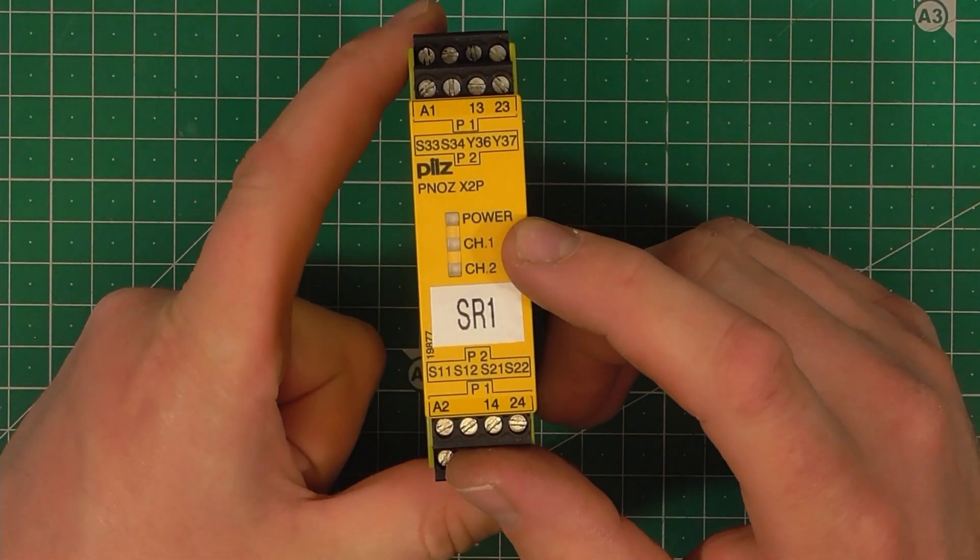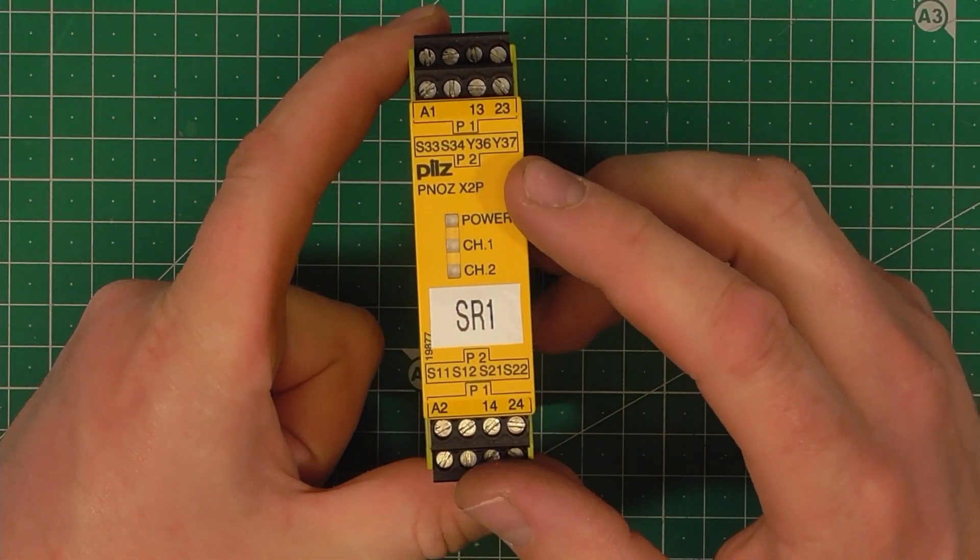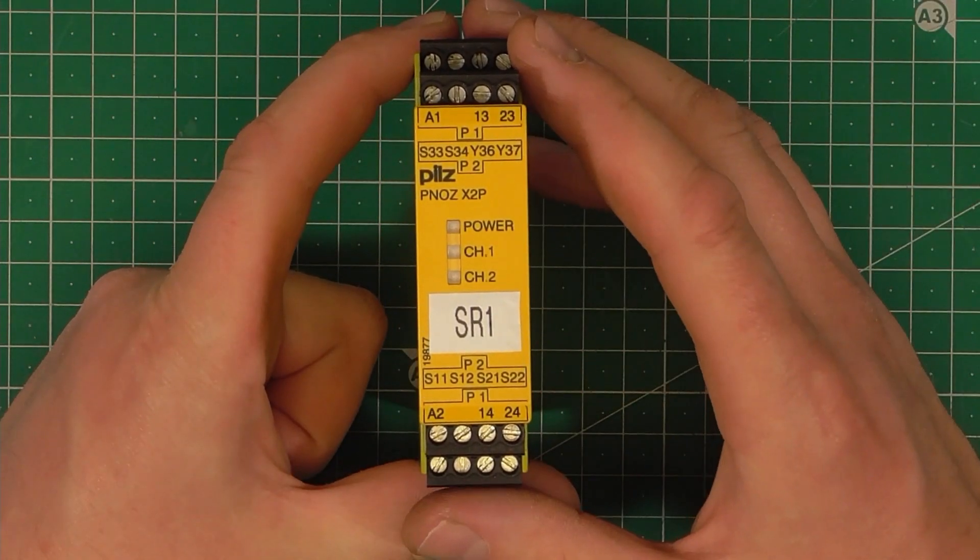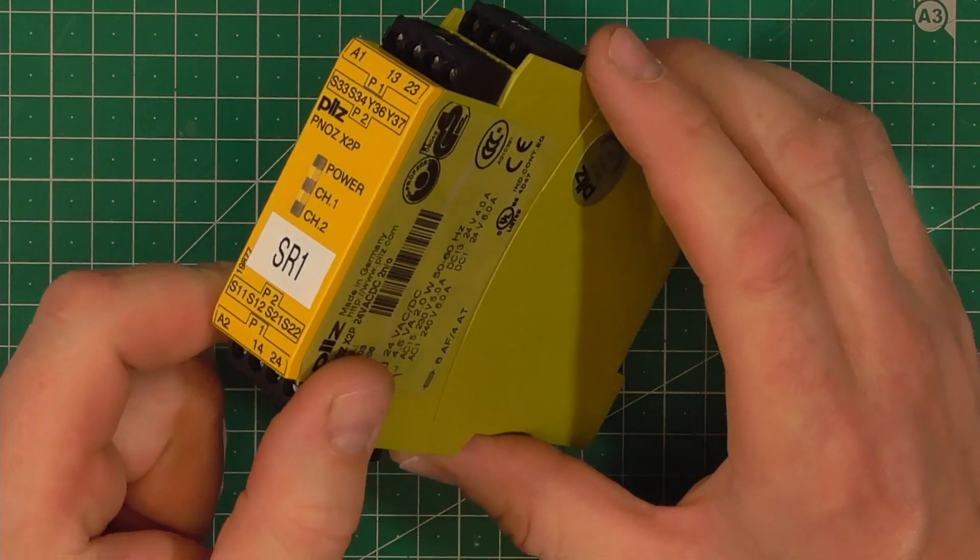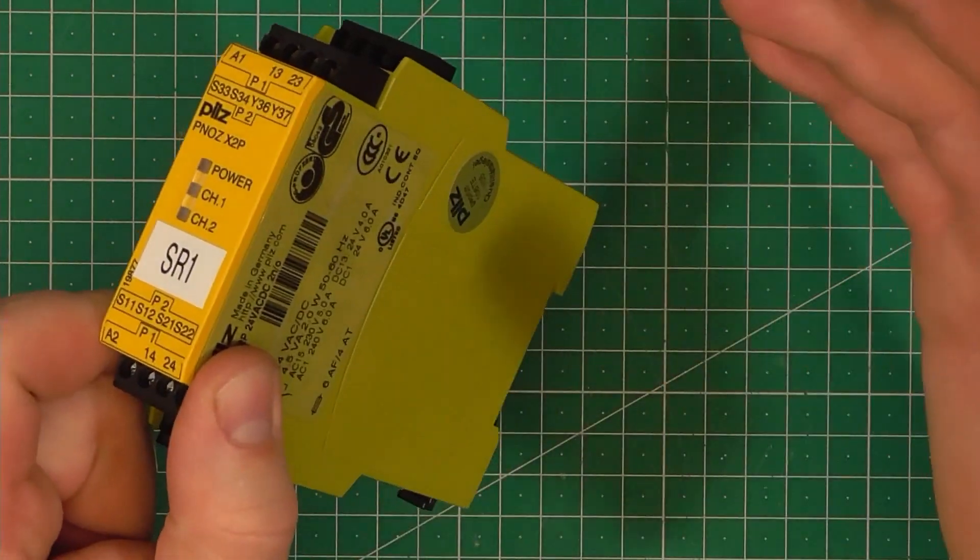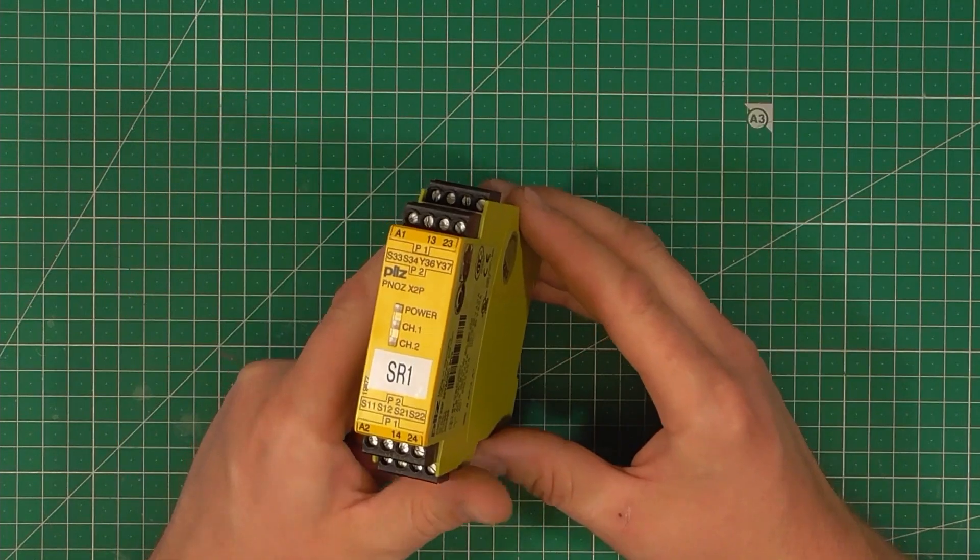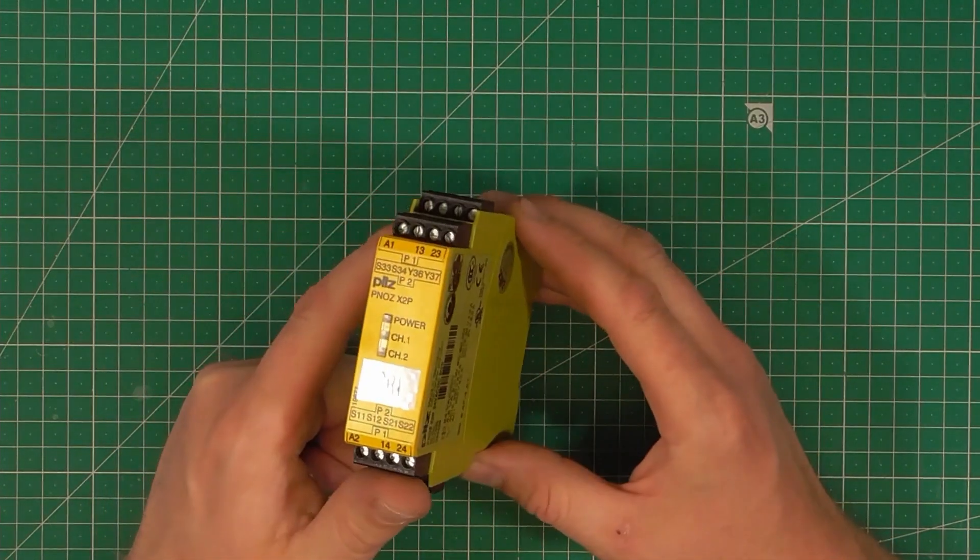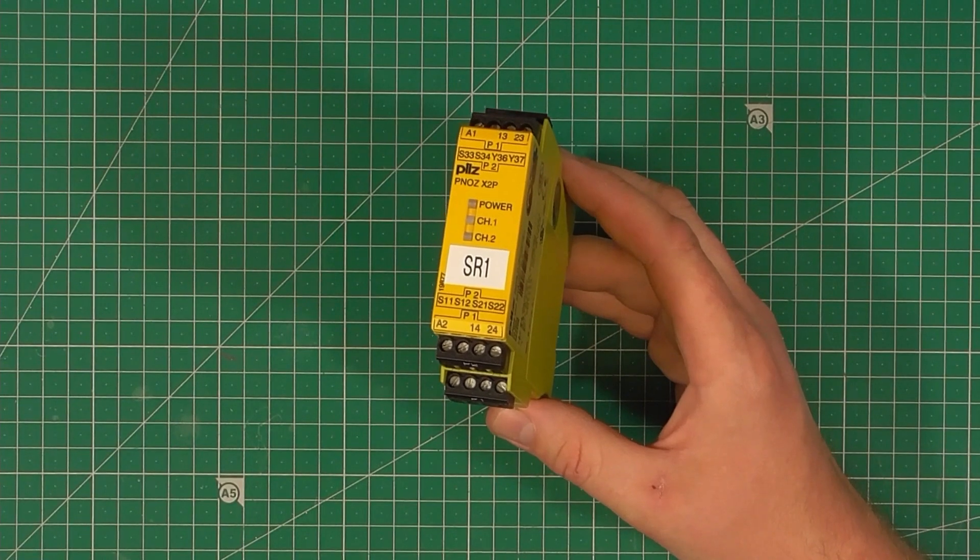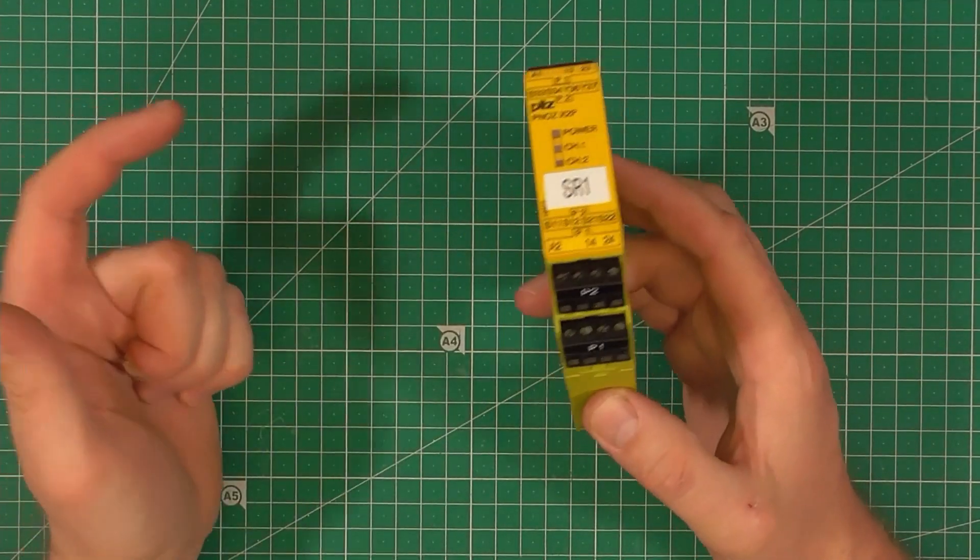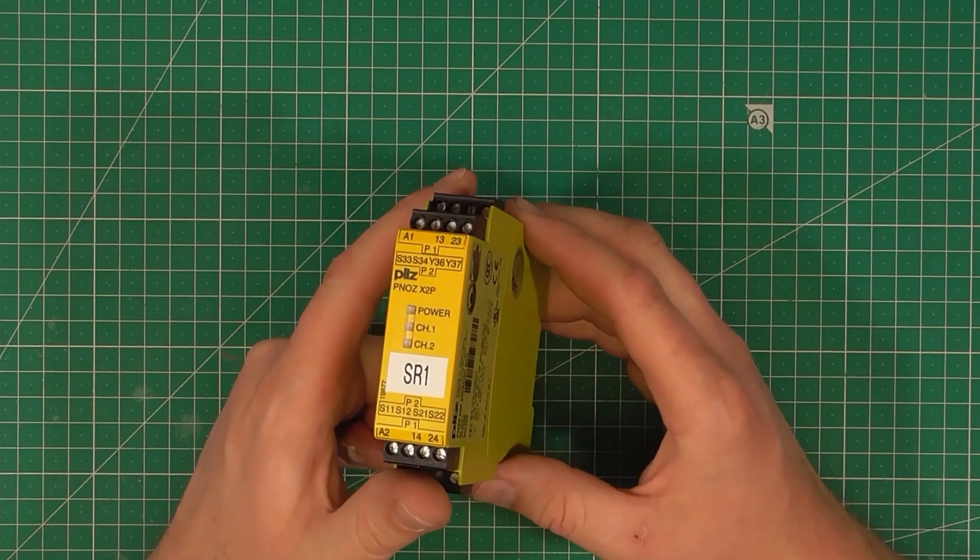Here's one of the simplest safety relays with two channels. There are two relays for output signal, so they can control two separate circuits. Also, some terminals for a reset button—that reset can be automatic or manual, depending on how we're gonna set the relay, but we're gonna use manual reset.